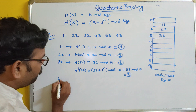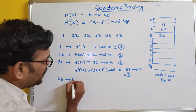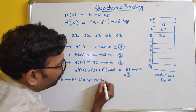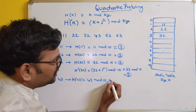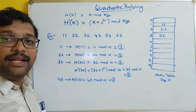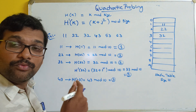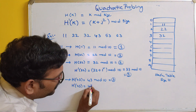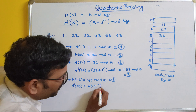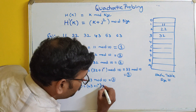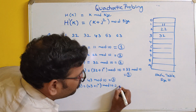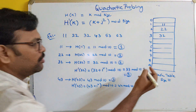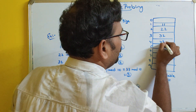For 43: h(43) = 43 mod 10 = 3. Index 3 already has data — there is a collision. So we calculate h'(43) = (43 + 1²) mod 10 = 44 mod 10 = 4. Index 4 is available, so we store 43 at location 4.